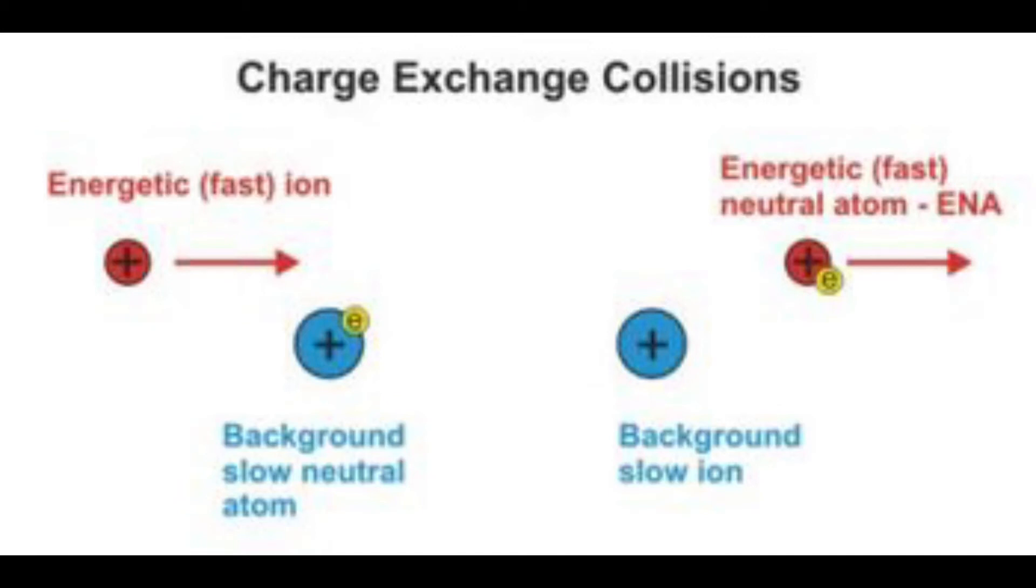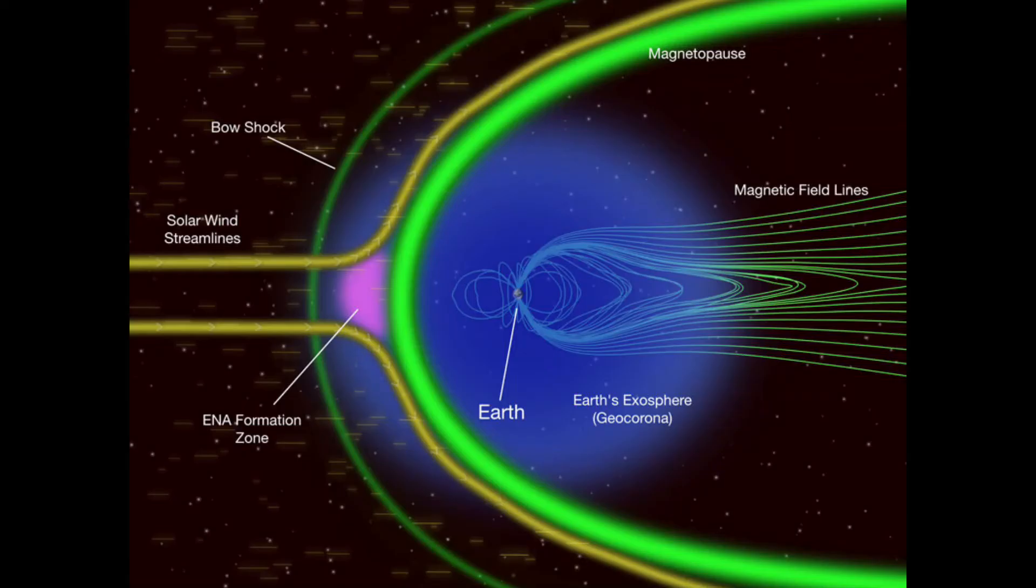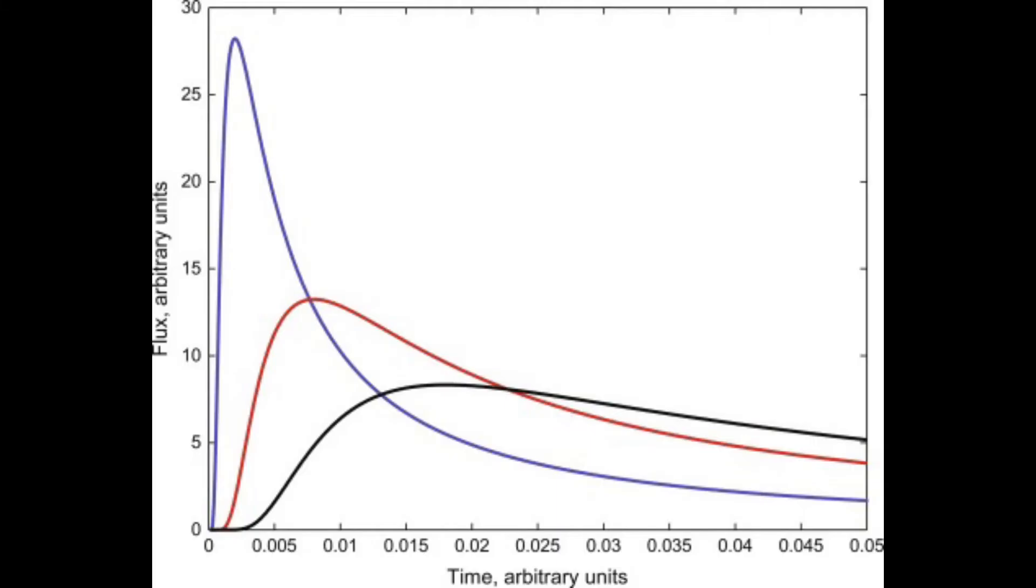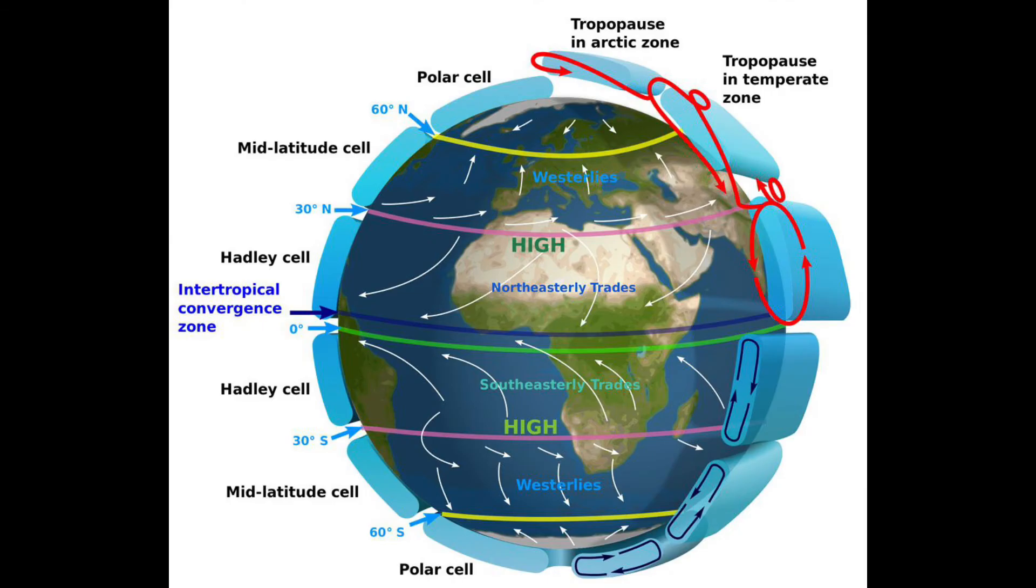Some of those particles are what scientists call Energetic Neutral Atoms or ENAs. These are generated by collisions between particles from the solar wind and particles from the interstellar wind. And the strength of their signal depends on the strength of the solar wind at the time of the collision. Just like the wind on Earth, the solar wind does not always blow at the same intensity.